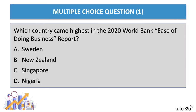Time for a quick multiple choice question. Which country came highest in the 2020 World Bank ease of doing business report? Press pause and think — was it Sweden, New Zealand, Singapore, or Nigeria? Well, the answer is New Zealand. New Zealand came top.